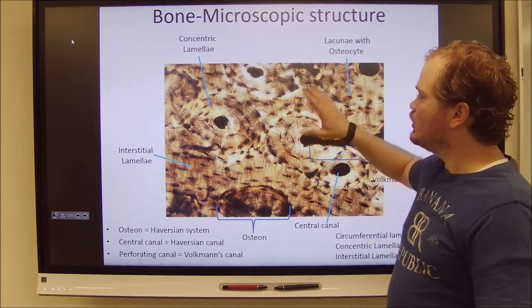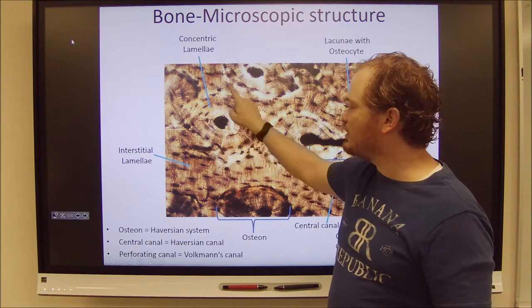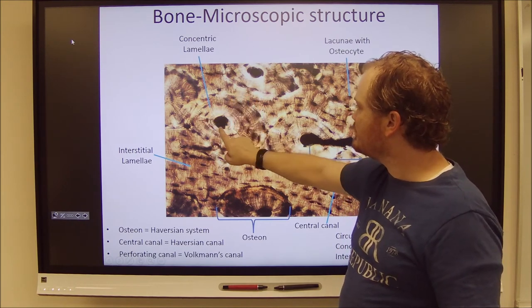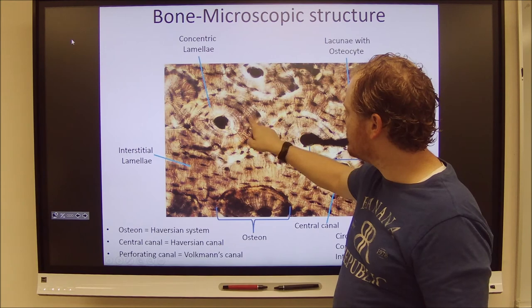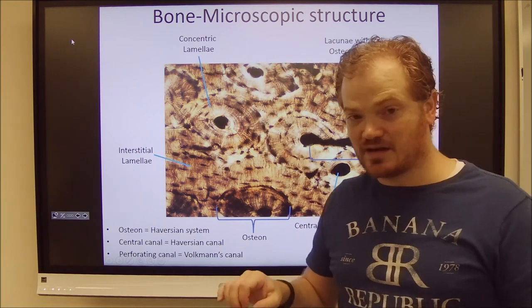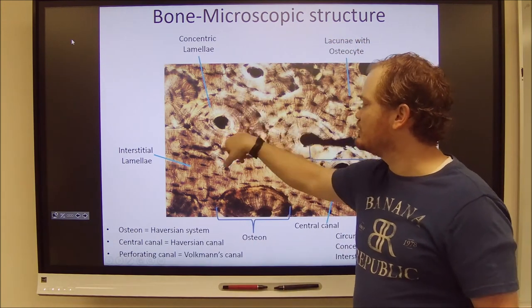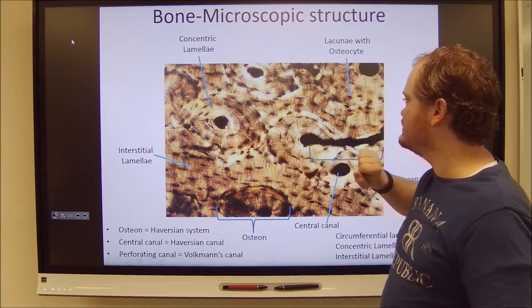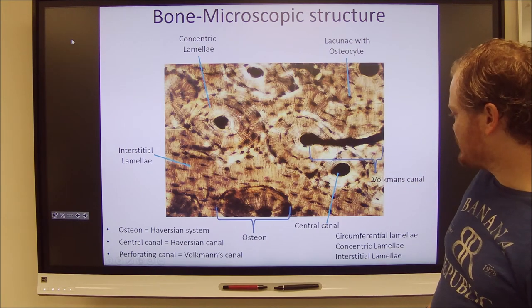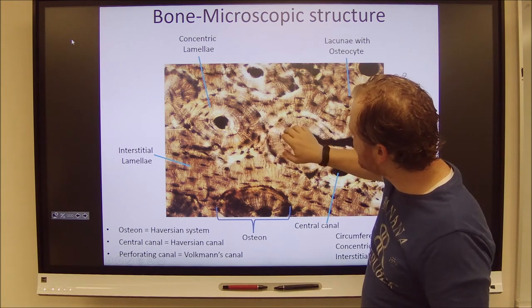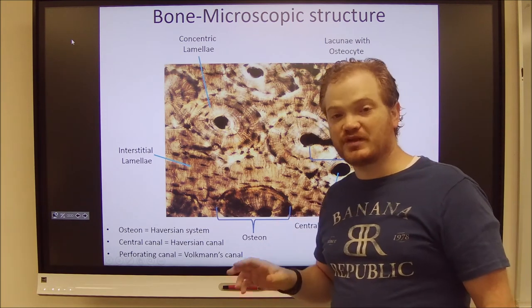An osteon has a central canal made up of individual rings called lamellae. All the little black spots inside are osteocytes living in openings called lacunae. There are perforating or Volkmann's canals visible as well. The little hairline cracks between the osteocytes are the canaliculi — I'll show you those better on the scope.